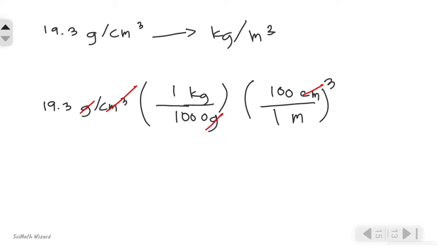Multiplying this value, we should get a value of 1.93 times 10 raised to the power of 4 kilograms per cubic meter. And this is our final answer.